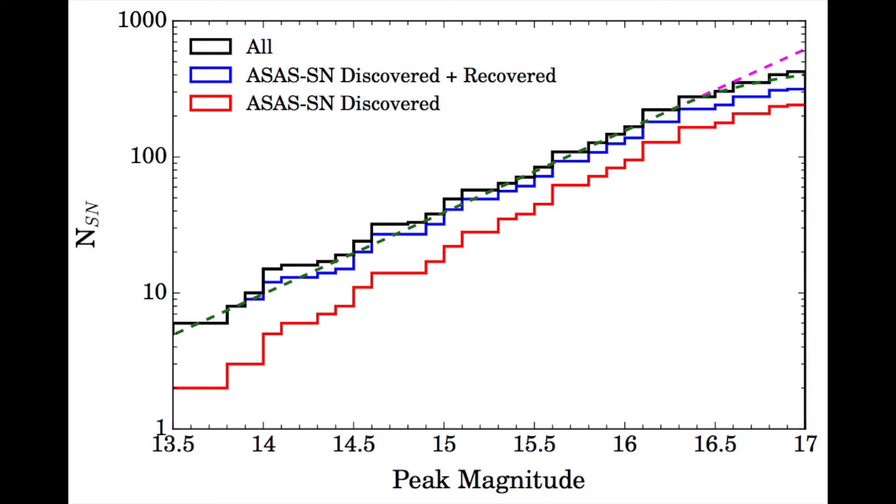The power law fit shows that our sample is complete to a magnitude of roughly 16.3, and roughly two-thirds of supernovae brighter than 17th magnitude are being found.